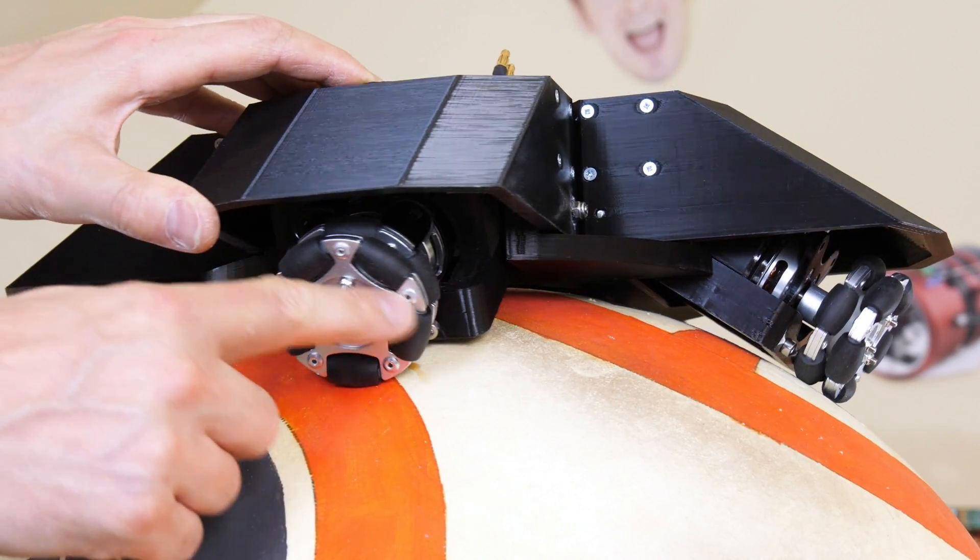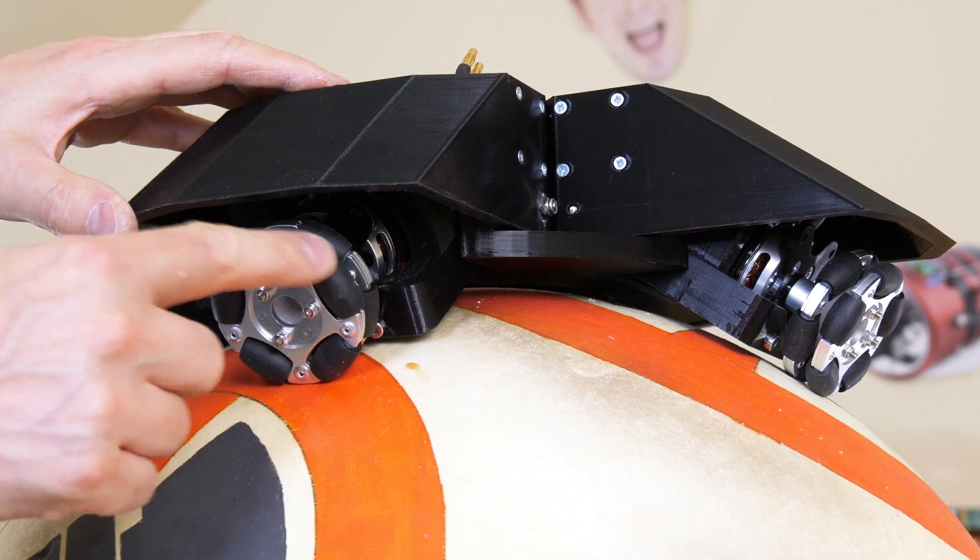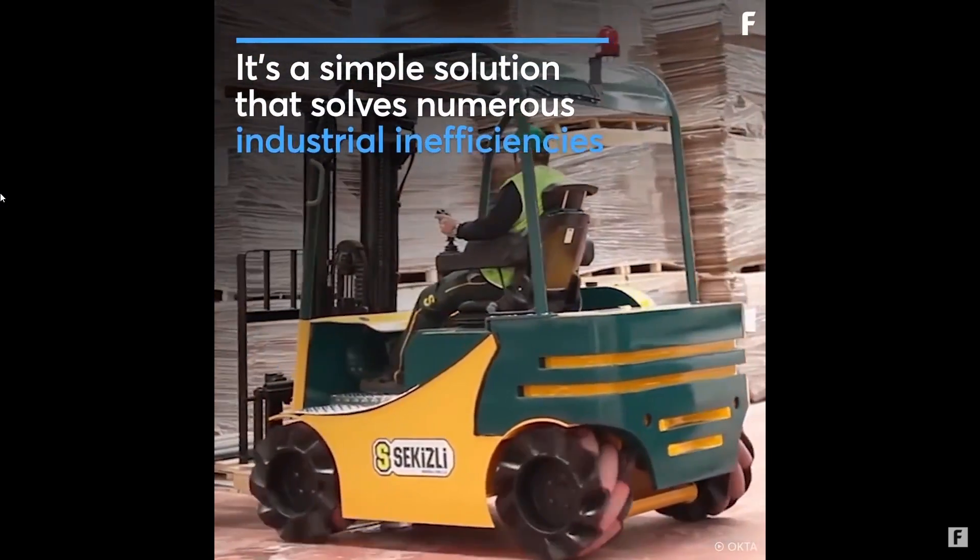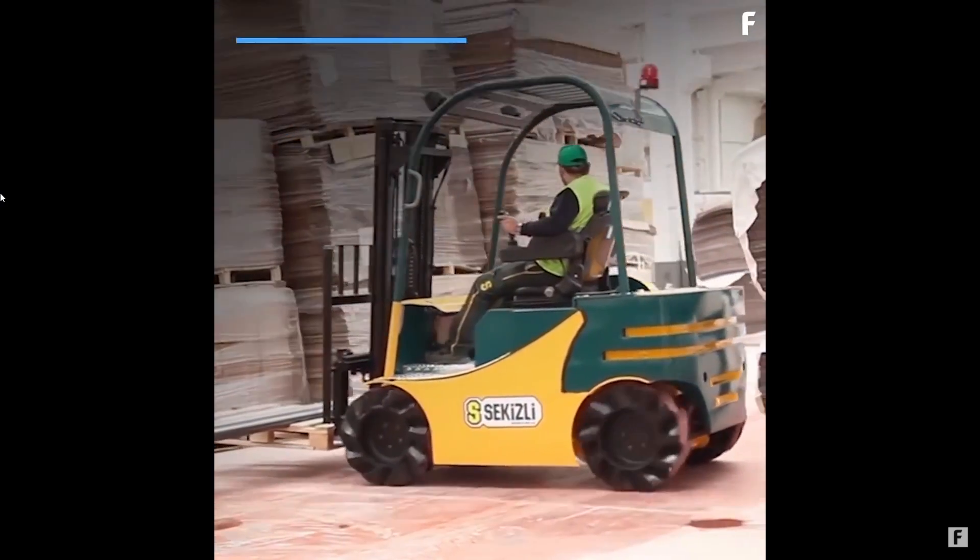The omni wheels are a wheel with smaller wheels all around the outside so they can slide sideways. You could of course just put omni wheels or mecanum wheels on the vehicle though, and there are also many examples of this.